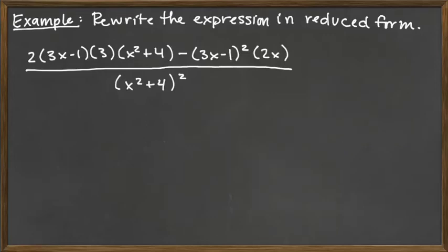For this example, we want to rewrite the expression in reduced form. And this expression here is a rational expression where the denominator – the bottom – looks pretty clean already, but the top looks pretty complicated.